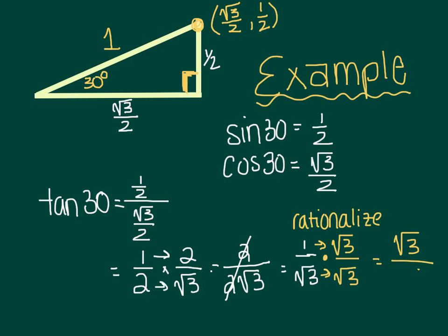So I know this was a lot of work, but now I can see that the tangent of 30 is actually the square root of 3 divided by 3.